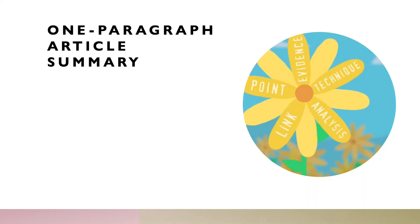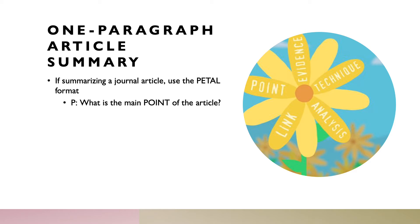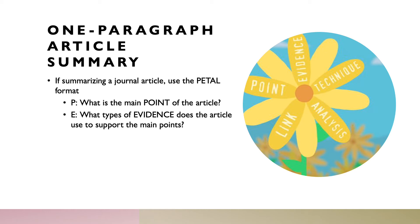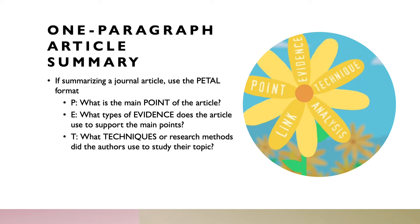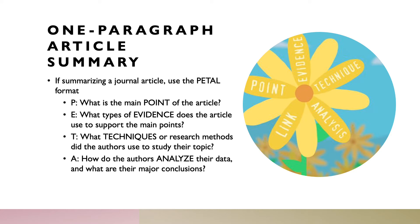Let's move on to article summaries. It might seem daunting to write just one paragraph as a summary of a journal article, because journal articles can be very long, but it is possible. You can use the PEDAL technique, which stands for: Point — what is the main point of the article? E for Evidence — what type of evidence does the article use to support the main point? T for Techniques — what research methods did the author use? A for Analysis — how do the authors analyze their data and what are their major conclusions? And L for Link — how do the major conclusions link back to the main point? If you answer those five questions, you'll have five statements to write one paragraph about a journal article.